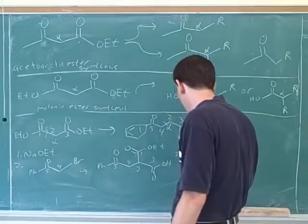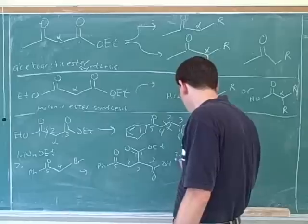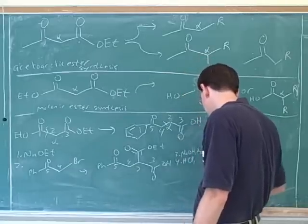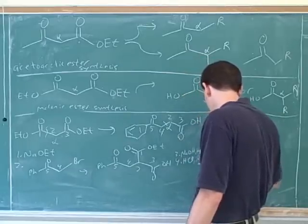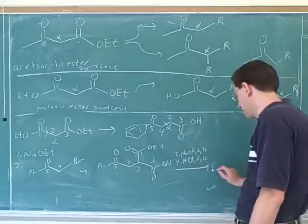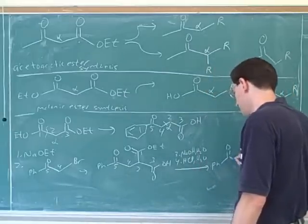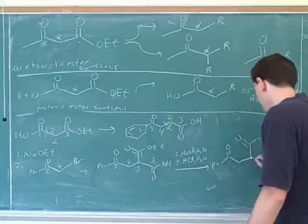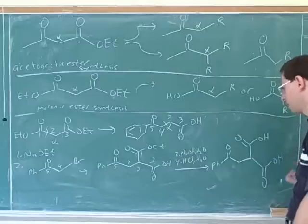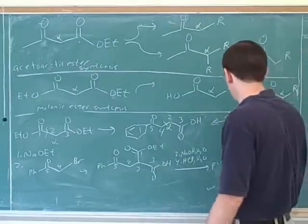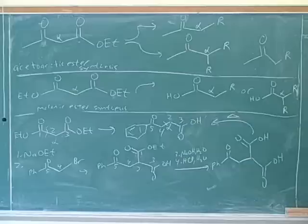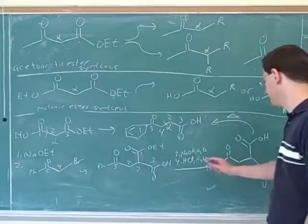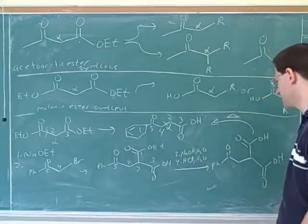So step three, sodium hydroxide. That gives us carboxylates. Step four, HCl and H2O. That turns the carboxylates into carboxylic acid groups. And then heat will decarboxylate. All right, get us where we're trying to go. We can really add the heat as part of this step. This is just the intermediate.